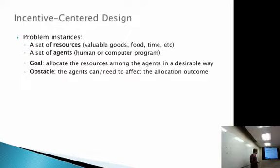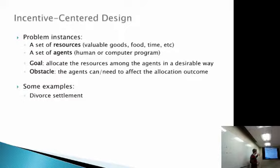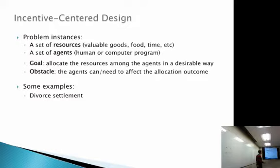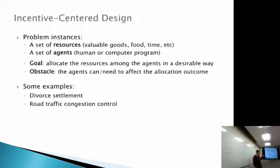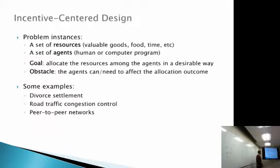The added obstacle is that the agents can or need to affect the allocation outcome. For example, in a divorce settlement, the agents are the couple, the resources are their shared goods, and the goal is to allocate fairly — but we cannot disregard their preferences. Another example is road traffic congestion control: agents are drivers, resources are streets, the goal is efficiency, and drivers can choose their own path. A third example is peer-to-peer networks with shared resources. All these problems fall under the same category.